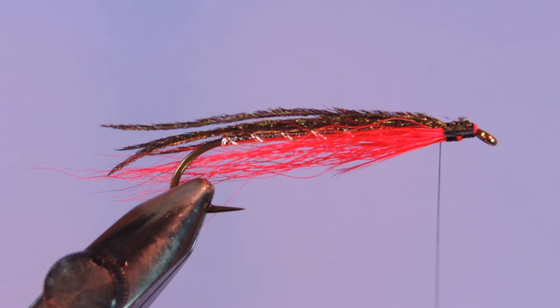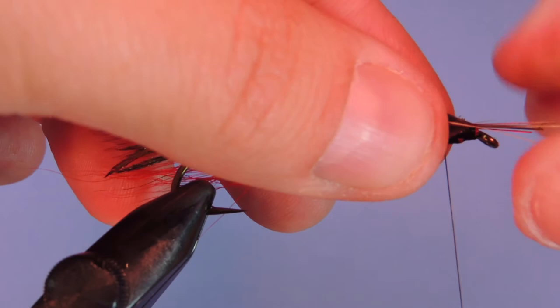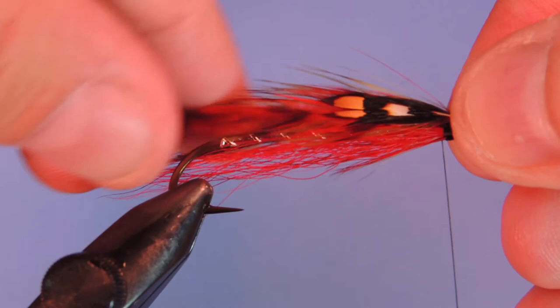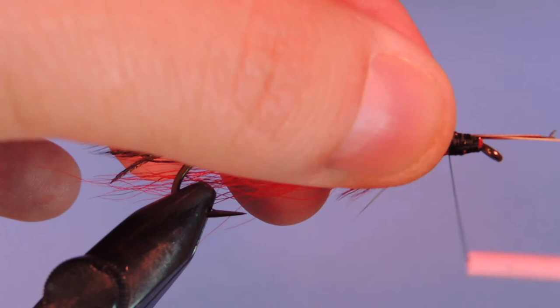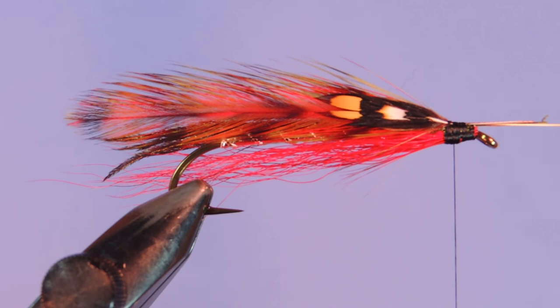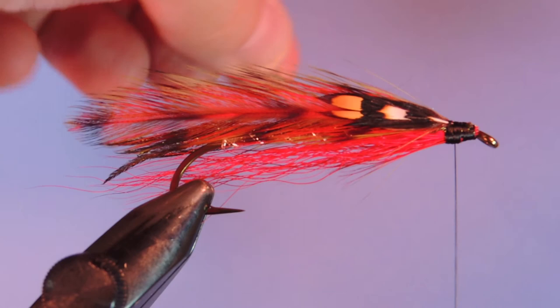Alright now we're going to go grab our wing that we've glued together previously. So we just want this to sit on top of the hook, sort of tented over the peacock curl. Now with the peacock curl I should also mention that some of the flies I've seen don't include this. But some of them do. So the one that I tied before didn't have it and this one does. So we got those wings secured. We'll just trim that off.